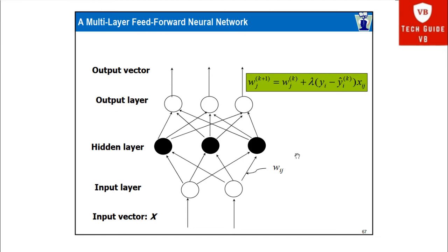Similarly, the multi-layer feedforward neural network has multiple layers. In a single neuron network there is an input vector and a hidden layer producing an output. But in the multi-layer version, the input layer connects to one or more hidden layers, and the output layer is also associated with a hidden layer.